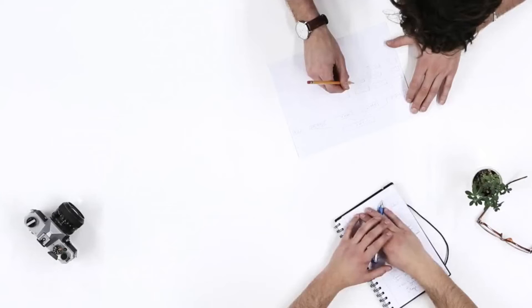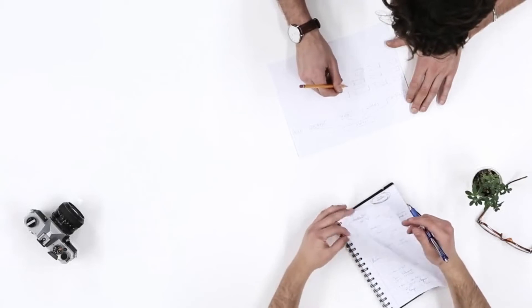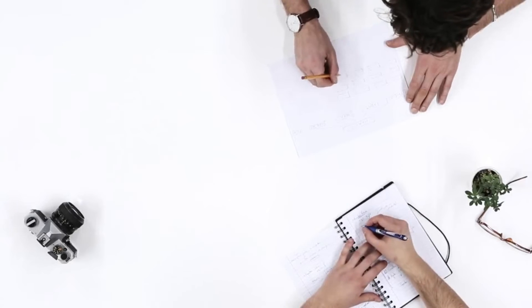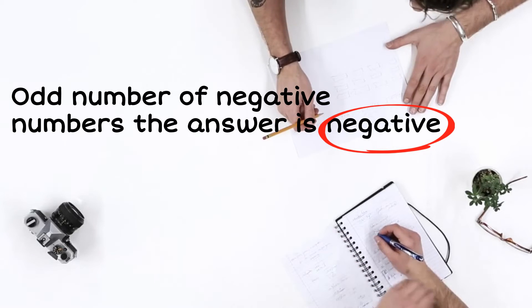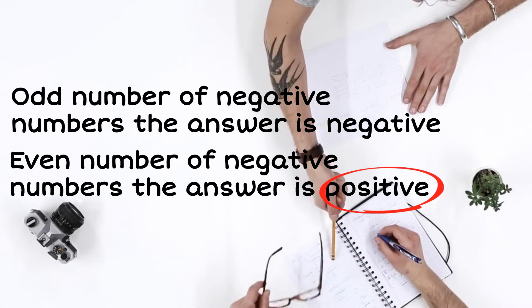The rule is this. Count the number of negative numbers you have. If this number is odd, the answer will be a negative number. If this number is even, the answer will be positive.